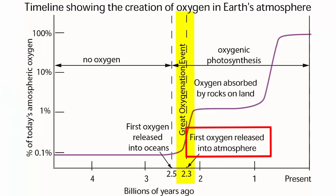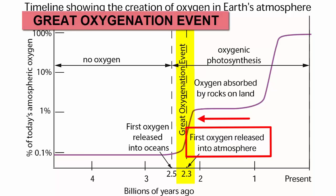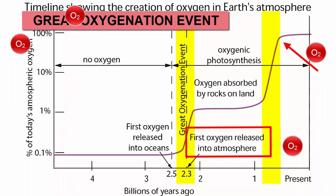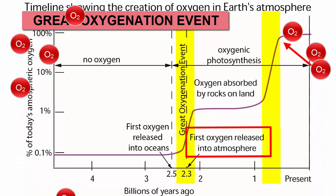We call this period of time, about 2.3 billion years ago, when oxygen gas began to accumulate in the atmosphere for the first time in amounts as large as 1% of current values, the Great Oxygenation Event. It was over 1 billion years later before another large oxygen increase event brought oxygen levels up to today's levels. It took that long for the oxygen to complete its chemical reactions with other atmospheric gases and dissolved metals on Earth's surface. After that work was done, oxygen gas could begin to accumulate in amounts necessary to support more advanced life.